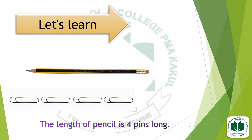Let's learn how we measure the length of long objects by using small objects. For example, here is one pencil and we measure the length of this pencil by using paper clips: 1, 2, 3, and 4. This pencil is equal to 4 paper clips. The length of the pencil is 4 pins long.